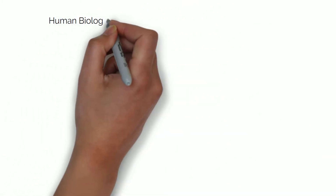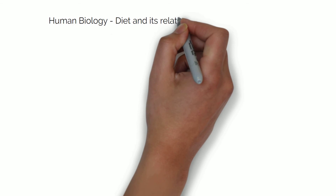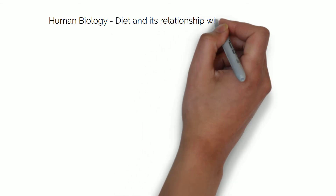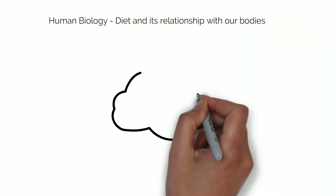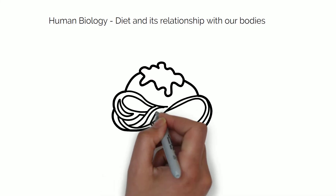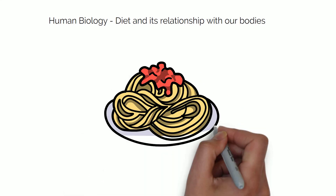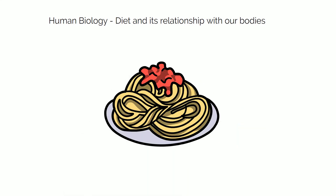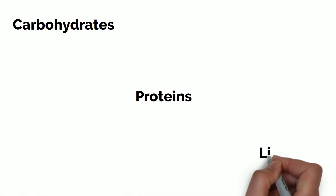Hello, welcome to the first video of the human biology course. In this video we will cover the interaction between what we eat and drink and our bodies, and how it all affects our health. Let's start by talking about the three main macronutrients: carbohydrates, proteins and lipids.